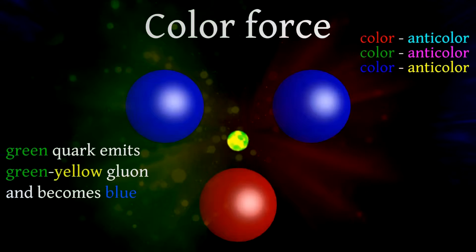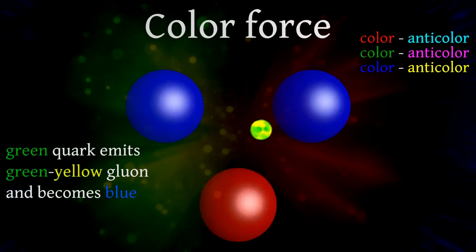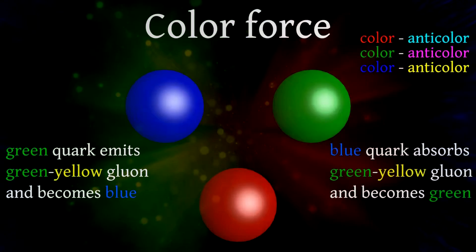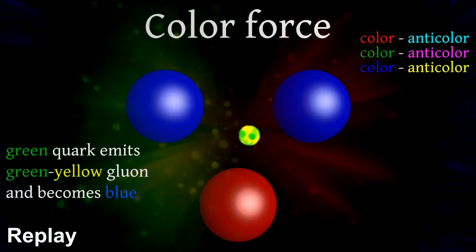The green quark will emit a green anti-blue gluon, making the quark blue. The green anti-blue gluon will then cancel the blue color of the blue quark and make it green. Note that during the time that the gluon is traveling between the quarks, they are the same color.